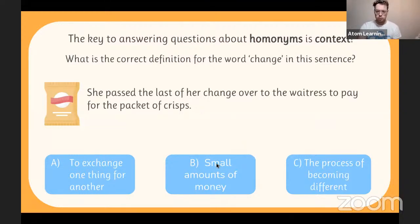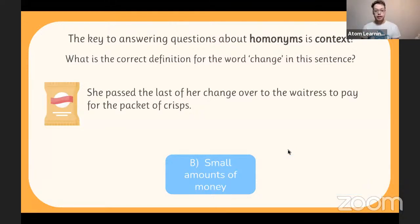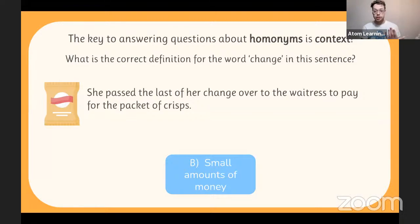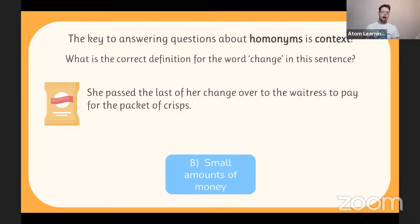The majority — 167 of you — went for answer option B: correct! In this context, change is a small amount of money — she passed over a little money to pay for her crisps. I would have got prawn cocktail, my favourite flavour. Change can also be a verb — to exchange something or to change your look. But in this sentence it's a noun: a small amount of money. Remember to read for context when working out which meaning a homonym has.